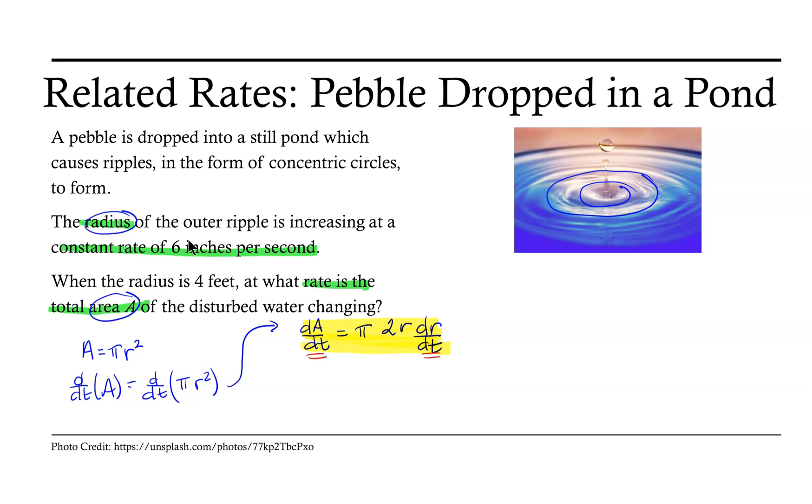Now what we've been asked to do is find the rate of change for the total area. We can notice that this equation as it currently stands has the rate of change of area equal to this product that we see on the right hand side.